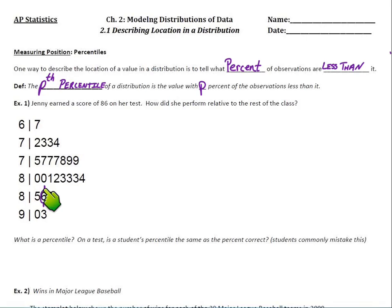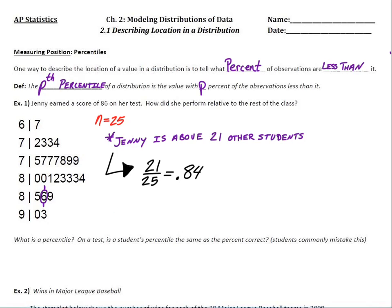So if she's in that position, she's above how many people? Well, there's 25 people in this class total. It looks like she's above 21 of them. Right? She's above 1, 2, 3, all these people. She's above 21 other students. So if she's above 21 out of 25, that gives us 0.84. So we say she's at the 84th percentile among her class on that test.